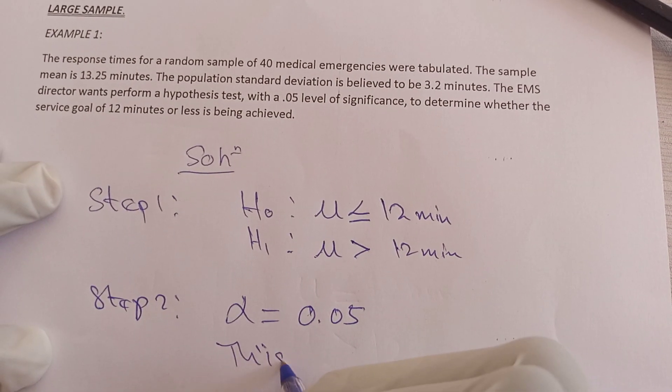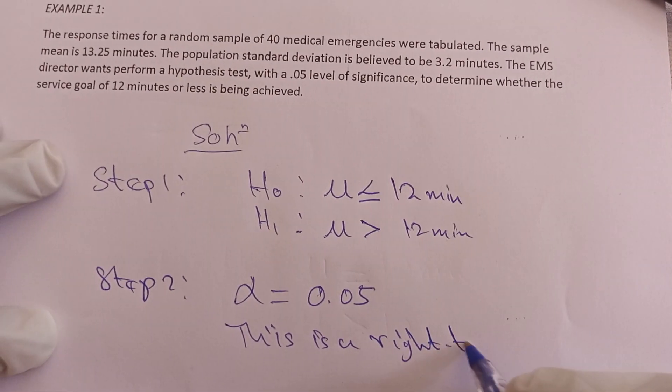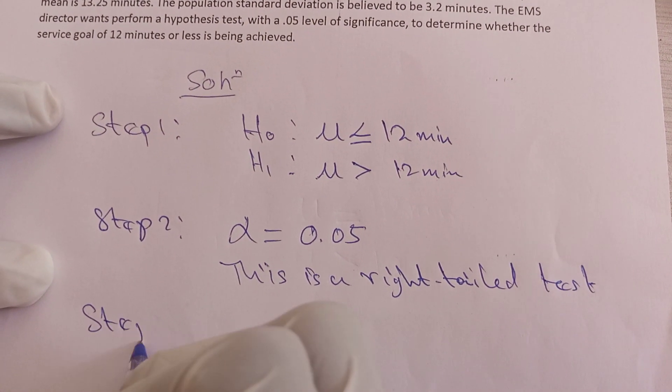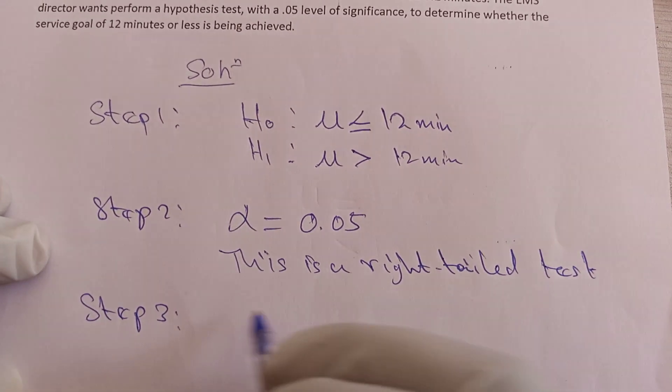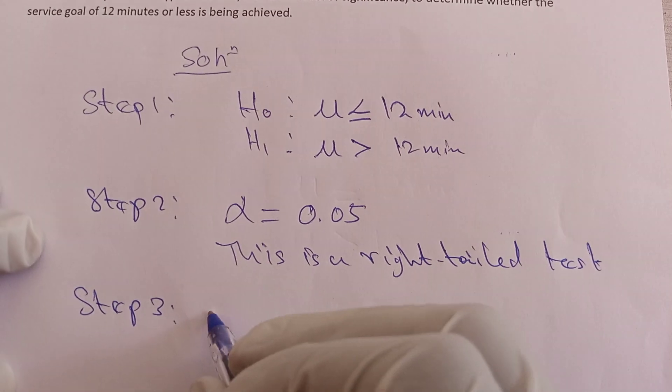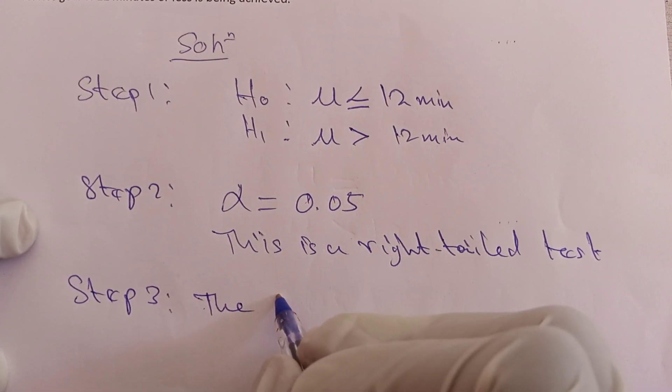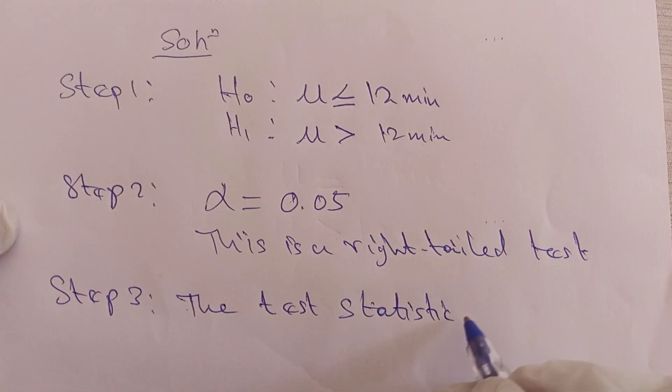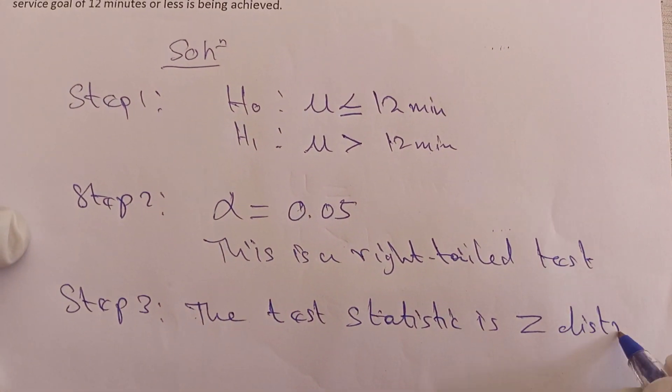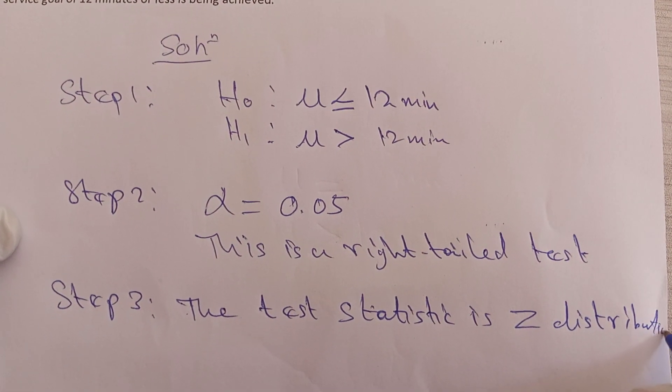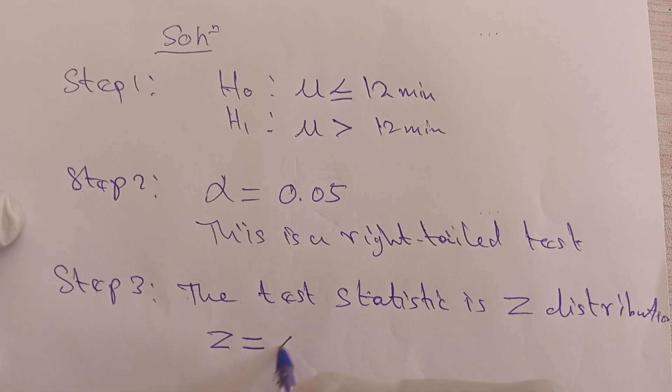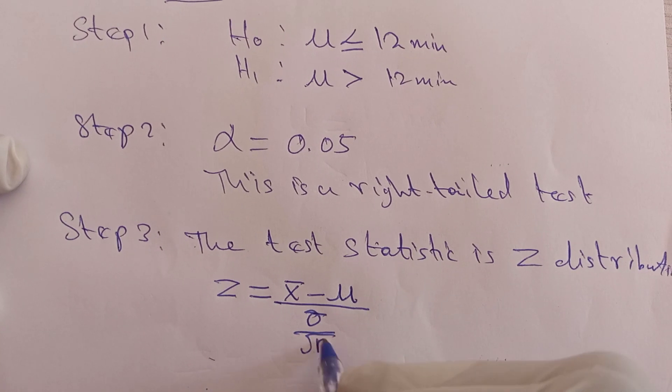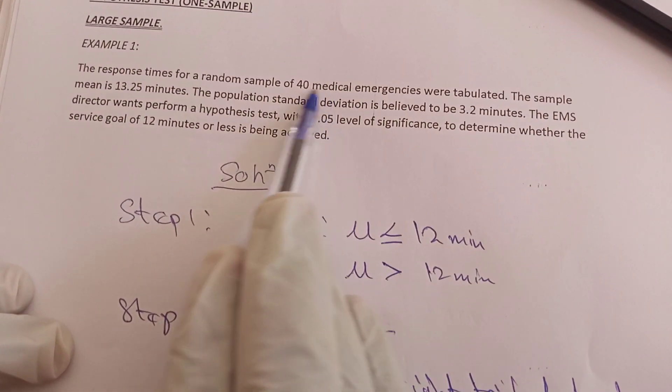Step three: you are going to tell the test statistic to use. The test statistic is the Z distribution. The formula for Z is: sample mean minus population mean, all over standard deviation divided by root n.